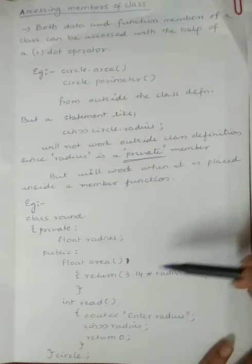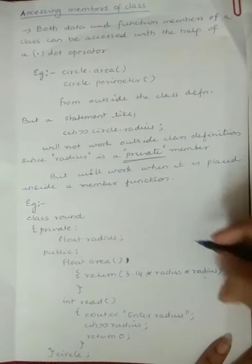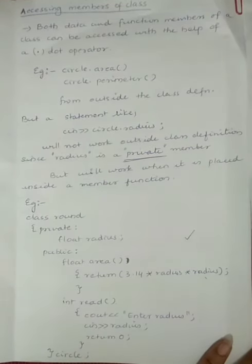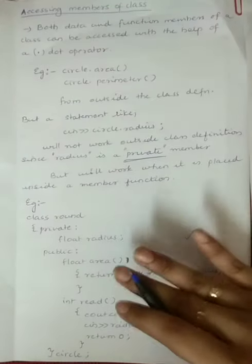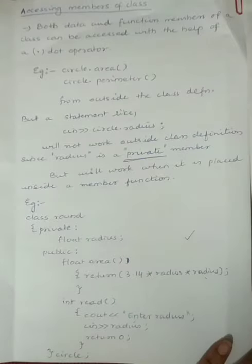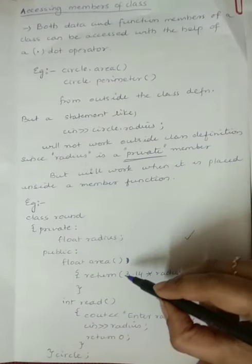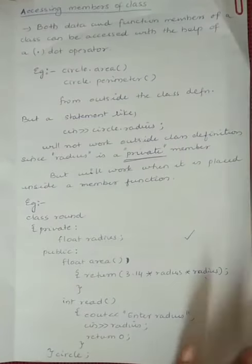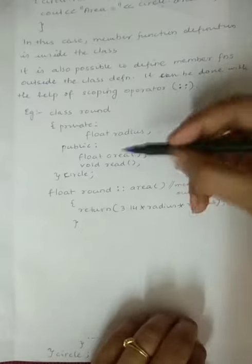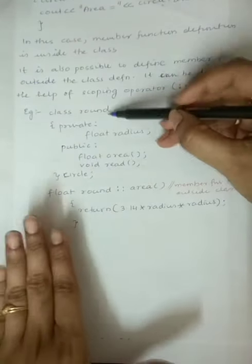So writing definitions directly inside the class is one method of defining a function inside the class. The same functions can also be defined outside the class. I will explain this using the same example — class `round`.